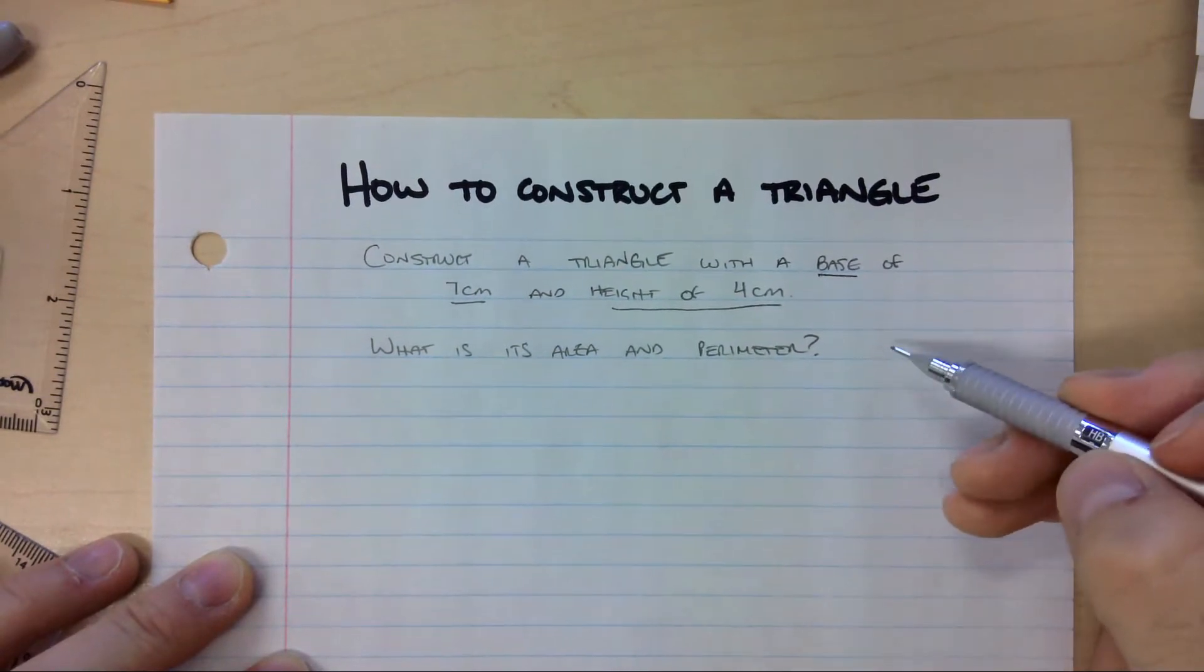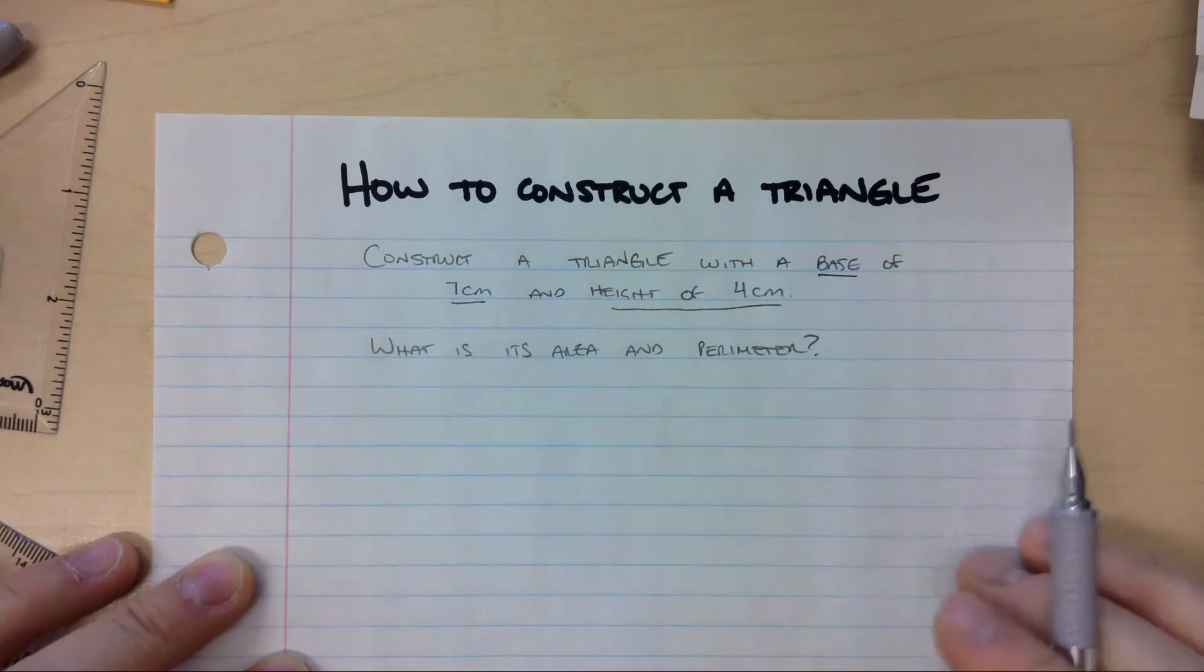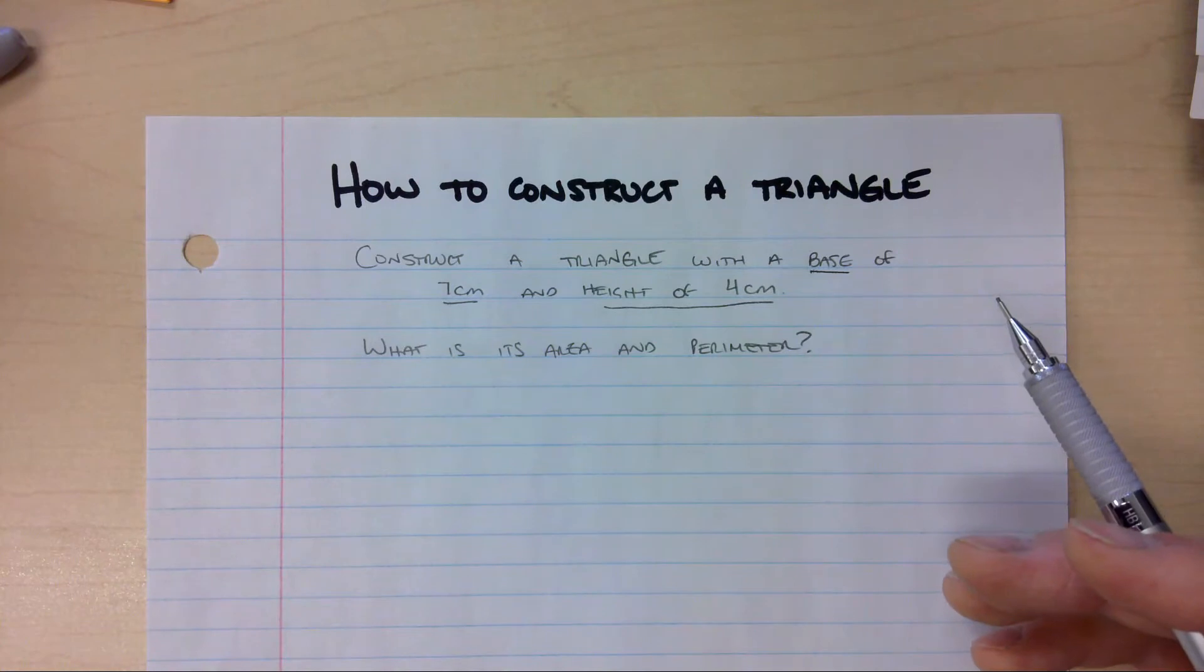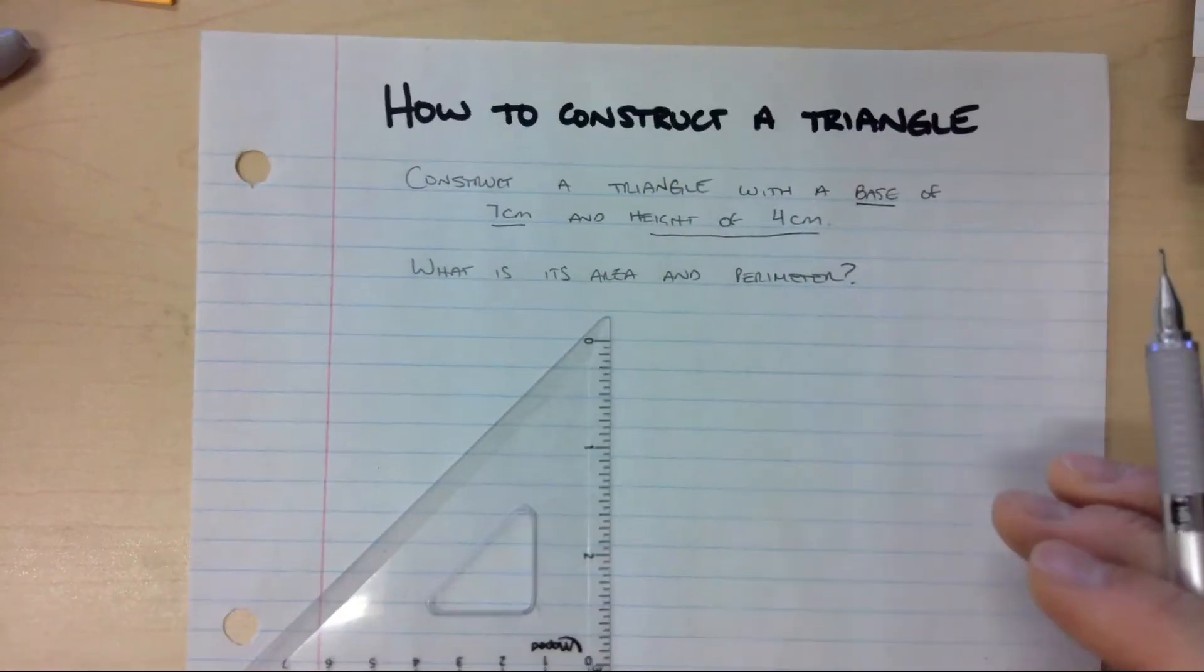But there's a part 2 in this question which says what is its area and its perimeter? Ok, let's get started with that. Before I find the area and perimeter I actually have to construct, so again I'm going to need a ruler and a set square to do that.